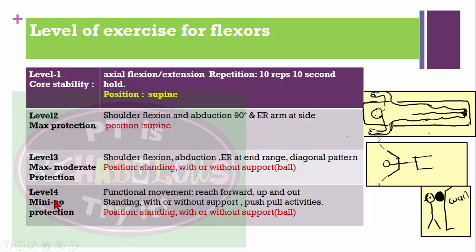Level 4 (minimum protection phase) — functional movements such as reaching forward and going backward, activities that take the patient out of position, and wall pushing exercises. These can be performed in standing with or without support of a ball.